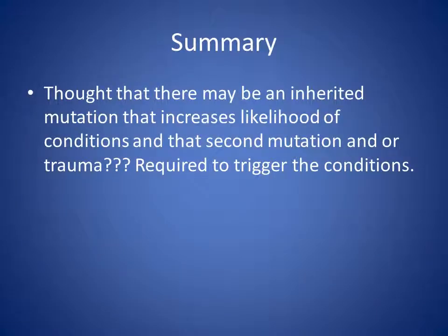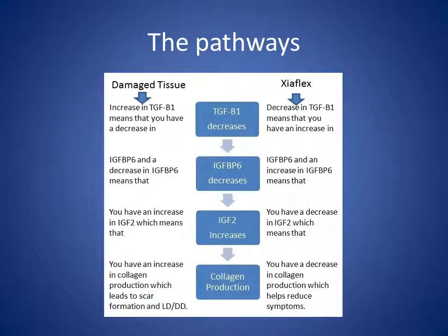In summary, one model is that there may be an inherited mutation that increases the likelihood of the conditions. But to actually develop the disease, you either require a second activating mutation, and or trauma, to then trigger the onset of these diseases in the hand. There is some evidence of which pathways may be involved. It's been looked at from the point of view of damaged tissue and scar tissue, because there's a similar pathway in play that results in the production of new cells to cover up the loss that's occurred when tissue has been cut.